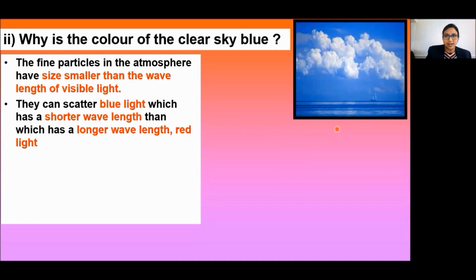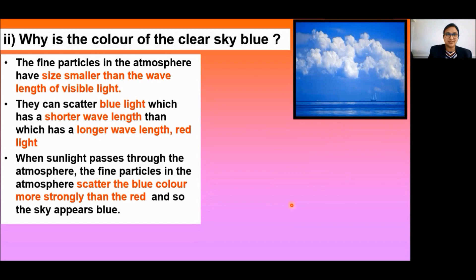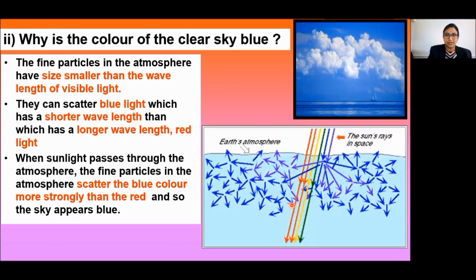The red light has wavelength about 1.8 times greater than the blue light. That means when sunlight passes through the atmosphere, the fine particles in the atmosphere scatter the blue color more strongly than the red color. And that is why the sky appears blue in color.